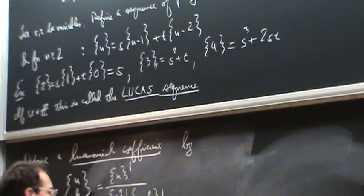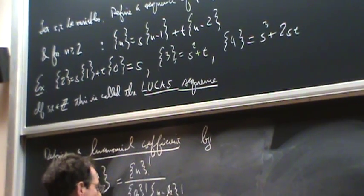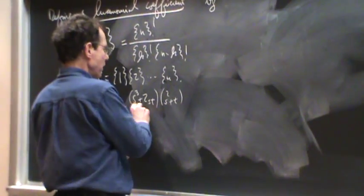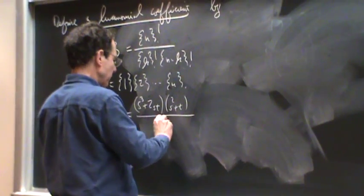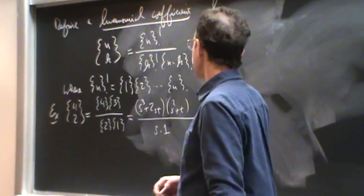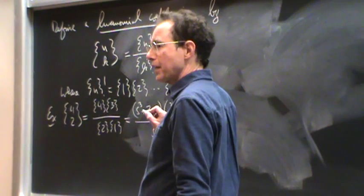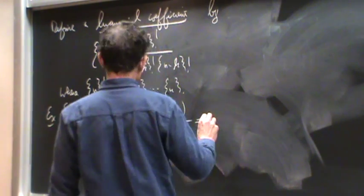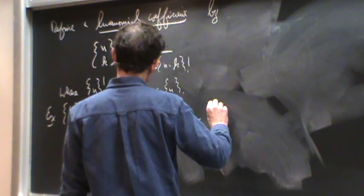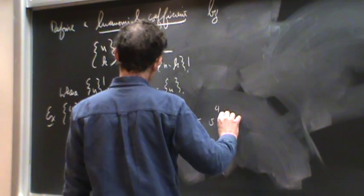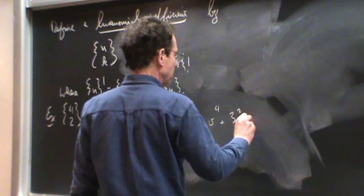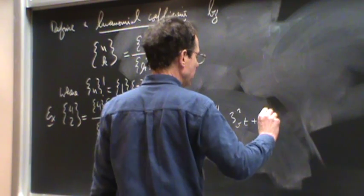Curly brackets {4} was s cubed plus 2st. Curly brackets {3} was s squared plus t. Curly brackets {2} was s. Curly brackets {1} is one. And if you feed that to your computer and let it crank for about an hour, it will spit out, if you're lucky, s to the fourth plus 3s squared t plus 2t squared.